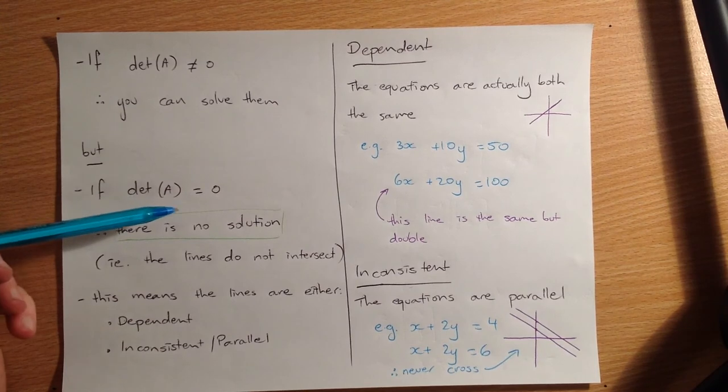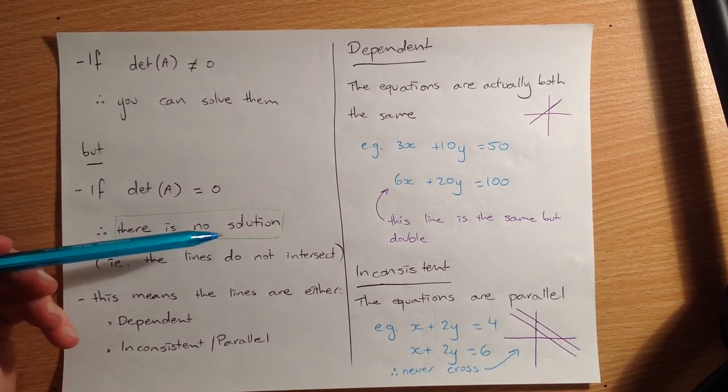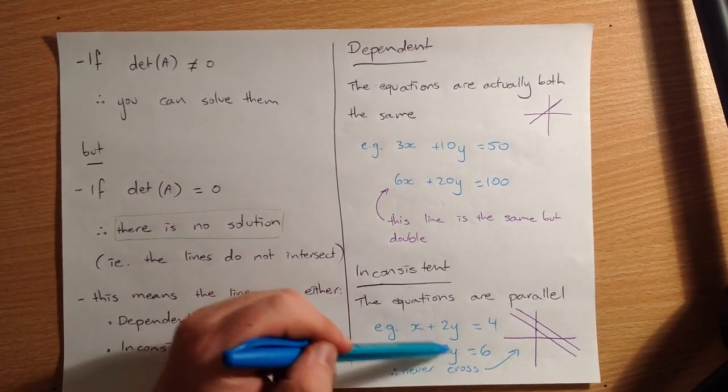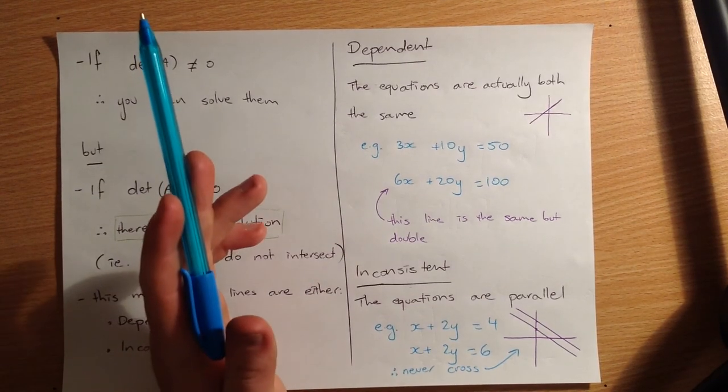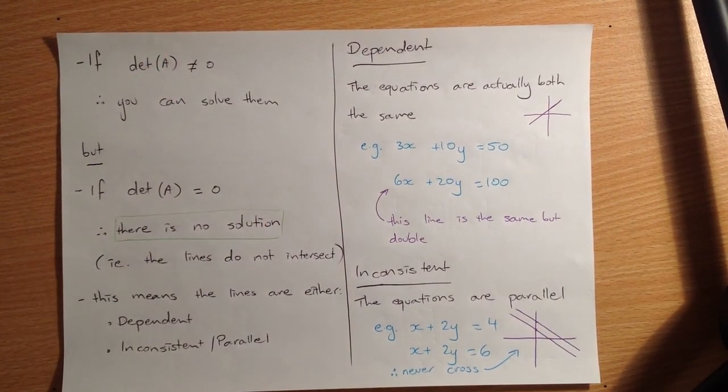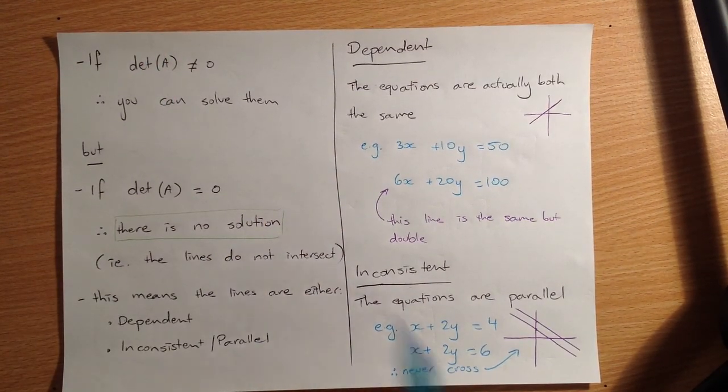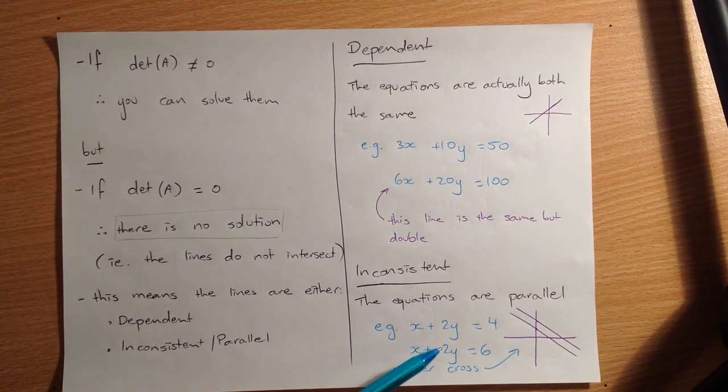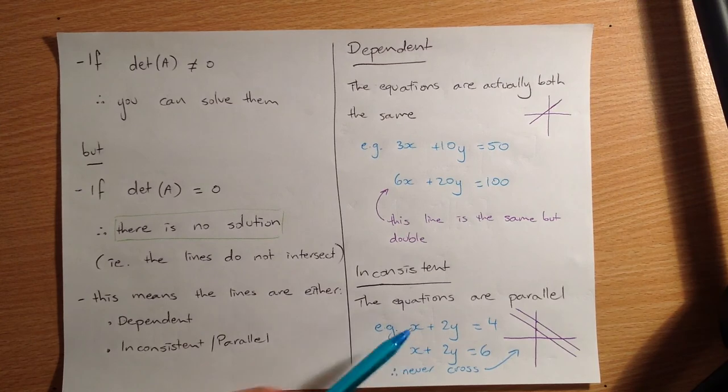You can just say the determinant is zero, therefore there is no solution. And if you graph those with your graphics calculator, you'll see that they're parallel, and they're obviously never going to cross if they're parallel, because they're just traveling along exactly in the same way. So the gradients are the same.